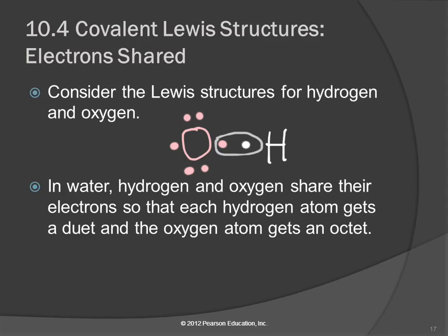My husband and I have six children. If you ask him how many children he has, he'll say six. If you ask me, I'll say I have six. They're the same six children — there are not twelve children in the house. So they count for both of us, and these electrons can count for both.